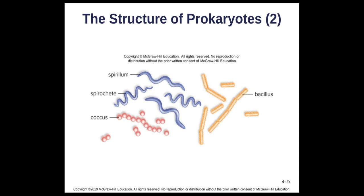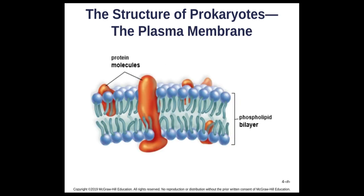Looking at bacterial shapes in a diagram: circles are coccus (singular cocci); the rigid spiral shape is spirillum; the more fluid spiral is spirochete; and the rod or tic-tac shape is bacillus. The plasma membrane is a phospholipid bilayer with protein molecules either embedded into the membrane or resting on the internal or external surface.